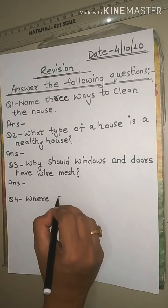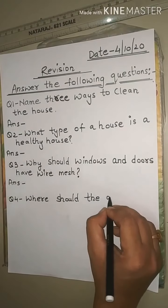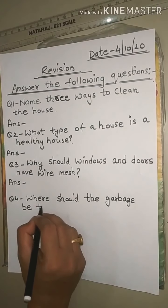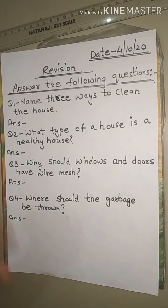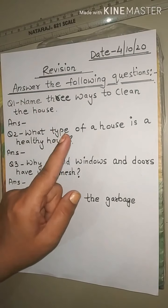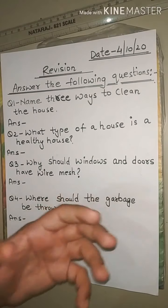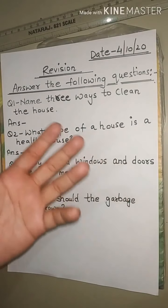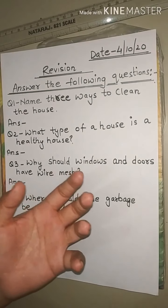Question number 4: Where should the garbage be thrown? So: question 1 — name three ways to clean the house; question 2 — what type of house is a healthy house; question 3 — why should doors and windows have wire mesh; question 4 — where should the garbage be thrown, i.e., where should we throw the waste or garbage.